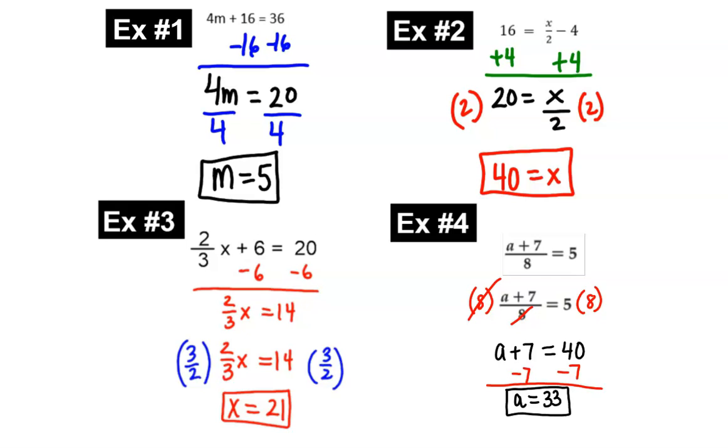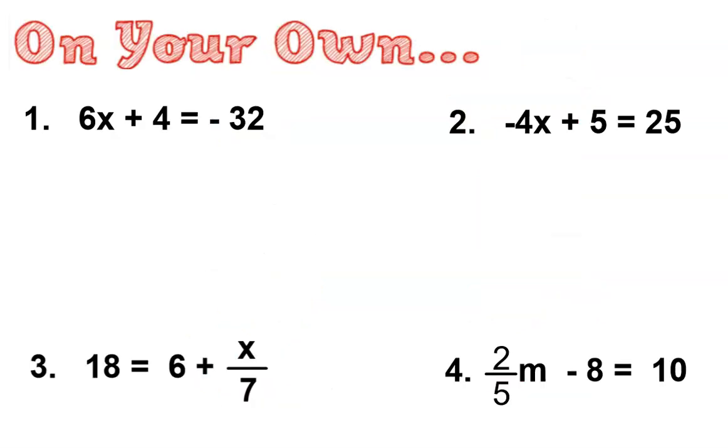So here we go. Number 1, 6x plus 4 equals negative 32. This side has the variable. So 6 and 4 are the numbers I'll be working with today. Now I can clear the 6 first, or I can clear the 4 first. It doesn't matter, but 1 is easier.